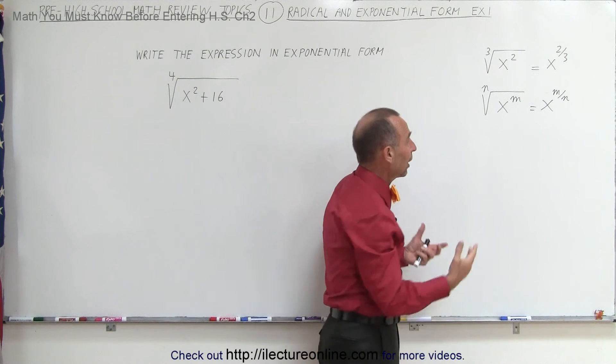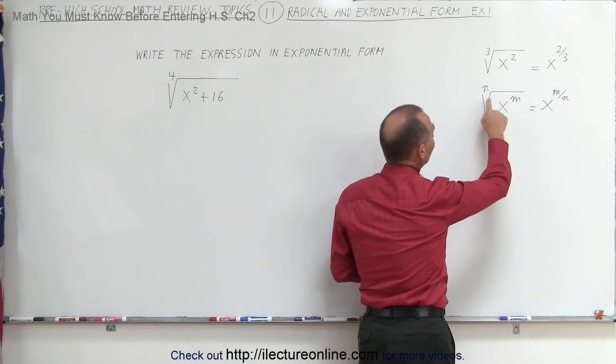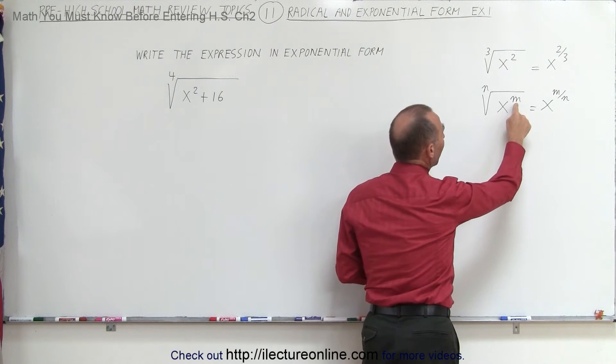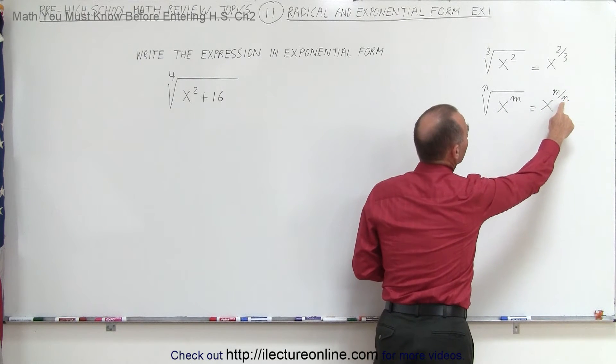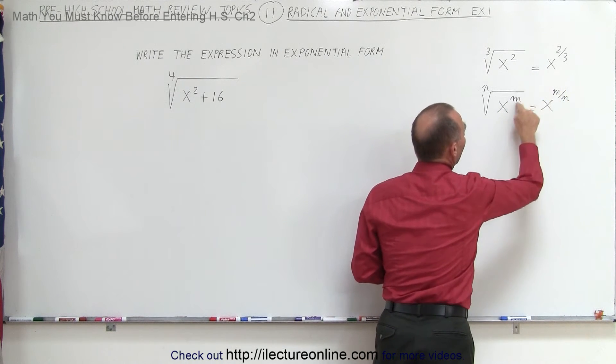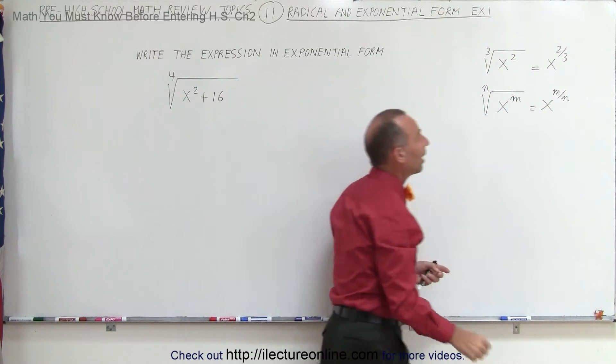So in general terms, without using numbers, we can say that this is the nth root of x to the m power. m becomes the numerator because that's the power, and n is the root which goes to the denominator.